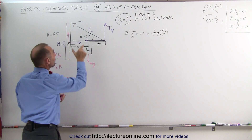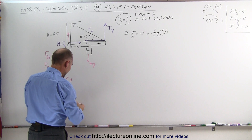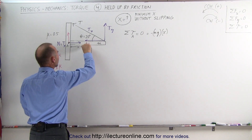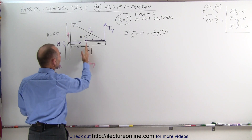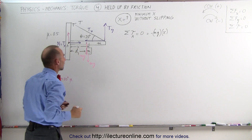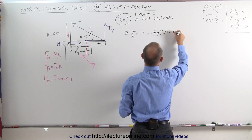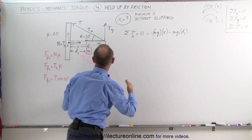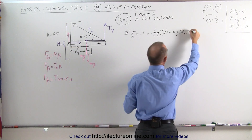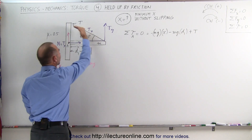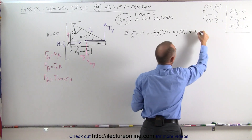The second torque is caused by the weight of the beam itself. The center of mass is at the halfway point, so another mg acts downward at distance D1 from the pivot — also a negative torque: minus mg times D1. Finally, the tension causes a counterclockwise, positive torque: plus T times D2, where D2 is the perpendicular distance from the line of action of the tension to the pivot point.